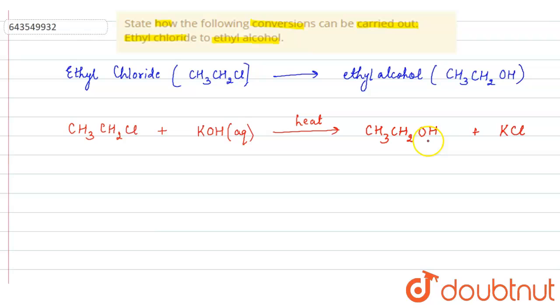So in this way we can convert ethyl chloride into ethyl alcohol. This is the answer.